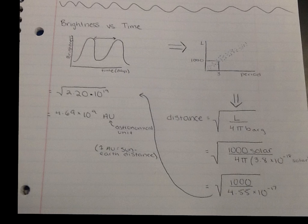To find the distance, we take our brightness versus time graph and Henrietta Swan-Levitt's graph, and we put that information into our distance formula, and through that we get that our Cepheid variable star is 4.69 times 10 to the ninth astronomical units away.